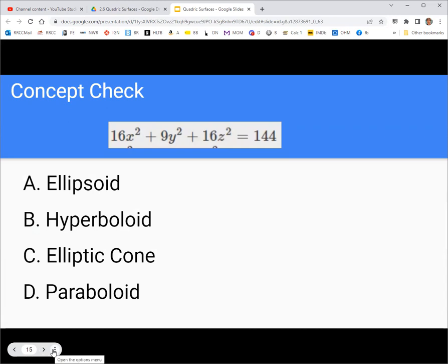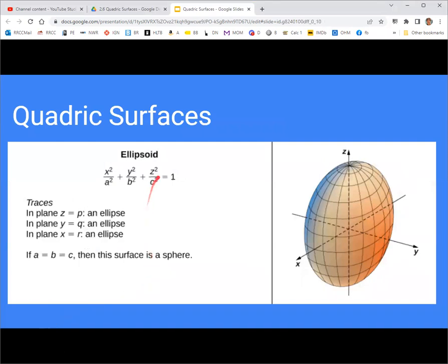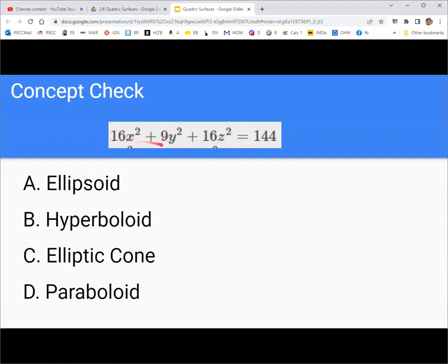Take a minute to look at this equation and maybe look back at the previous slides and identify the quadric surface for this equation. You should have gotten that this is an ellipsoid shape here. You would need to divide through to make it look like the standard form. If you divide everything by 144, then you will get it looking like that standard form. Sometimes you have to simplify these equations or change them around a little bit. The correct answer there is ellipsoid.